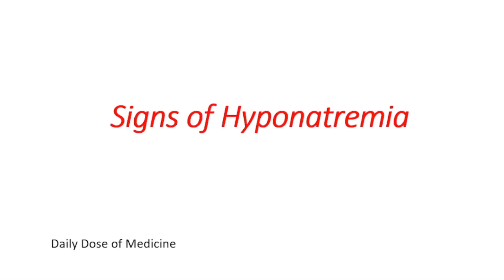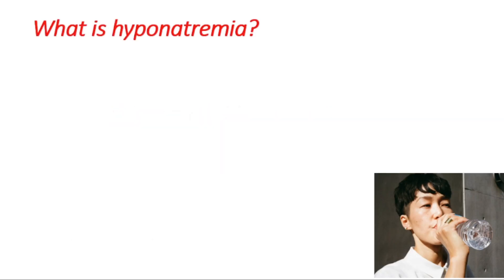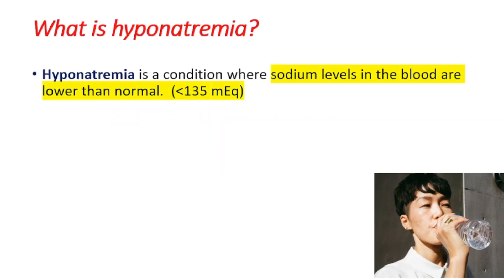Hey everyone, this is your daily dose of medicine. In this video we're going to talk about signs of hyponatremia. First of all, what is hyponatremia? Hyponatremia is a condition where sodium levels in the blood are lower than normal. The normal value is between 135 to 145. If it's lower than 135, then we will call it hyponatremia.